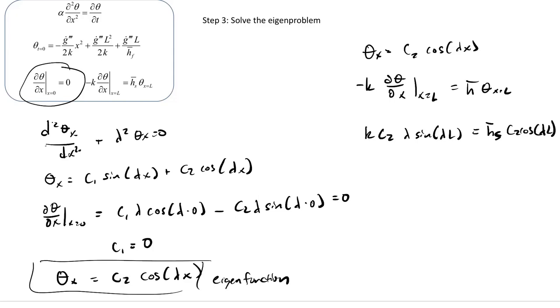C2's will cancel out here. And we're left with our eigen condition, which is bring cosine over to the left-hand side. So then we have tangent of lambda L is equal to H bar S times L over K times lambda L, or H bar over K times lambda. There's our eigen condition.